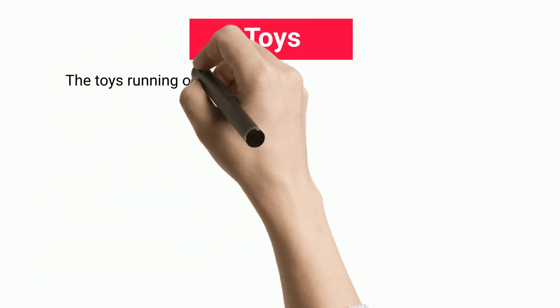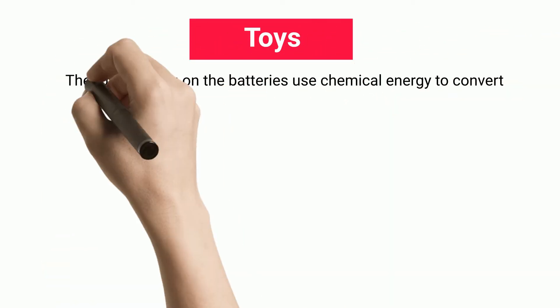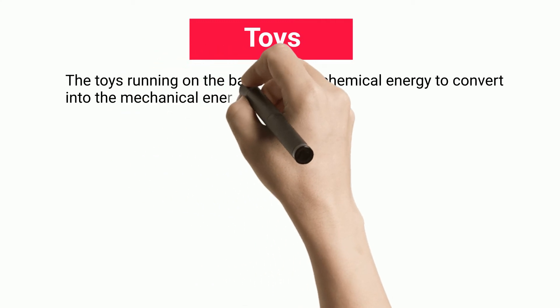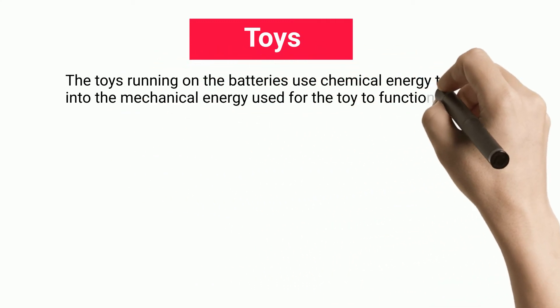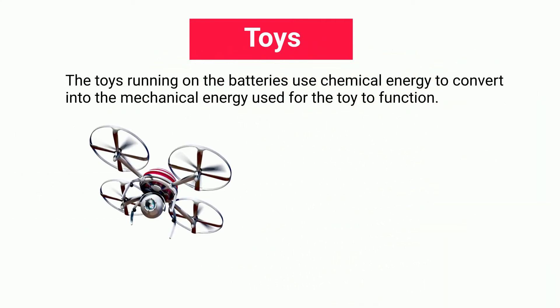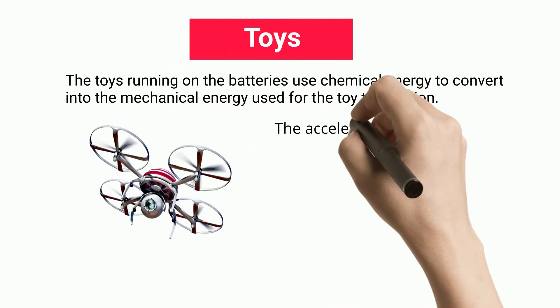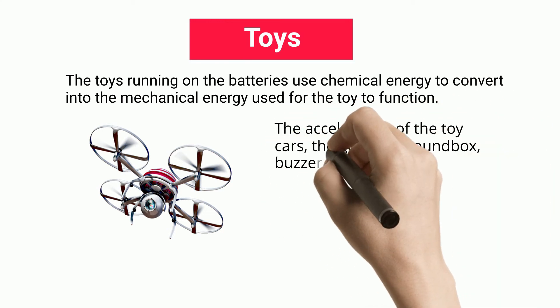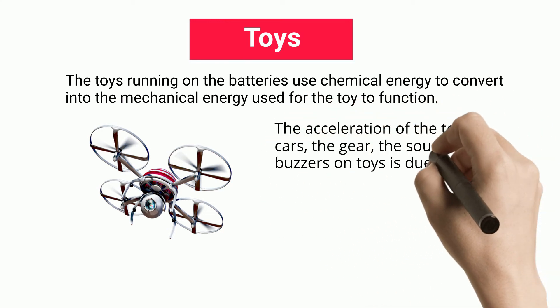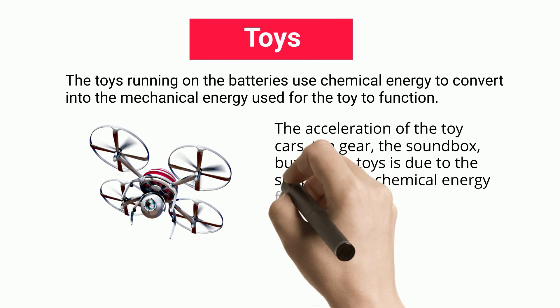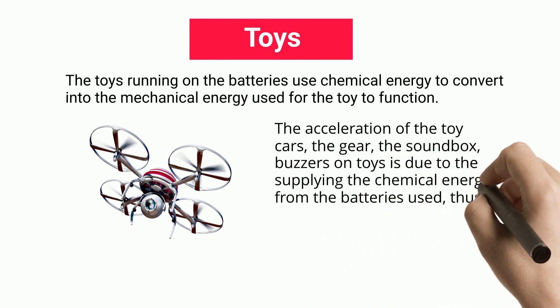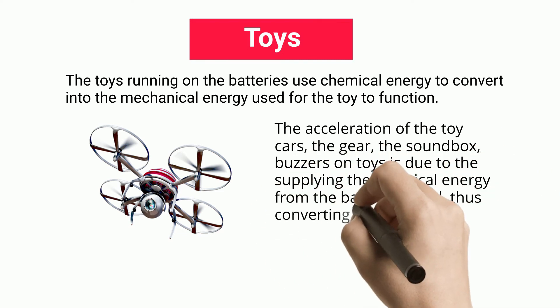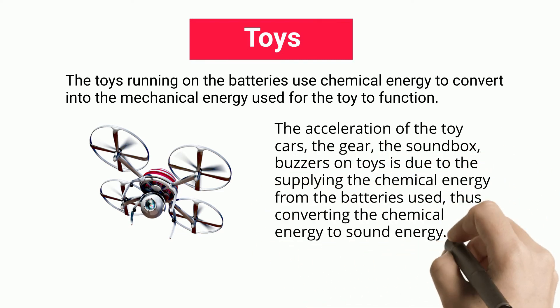Toys: toys running on batteries use chemical energy to convert into mechanical energy used for the toy to function. The acceleration of toy cars, the gears, and the sound box buzzers on toys are due to the supply of chemical energy from the batteries, thus converting chemical energy to sound energy.